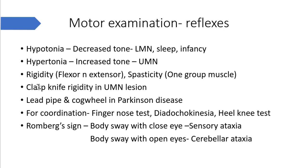In motor examination, you should know the terminology. Hypotonia is decreased tone, caused by lower motor neuron lesion, sleep, and infancy. Hypertonia is increased tone, found in upper motor neuron lesion. Hypertonia is described using the terms rigidity and spasticity. Rigidity is when both flexor and extensor muscles are involved; spasticity is when only one group of muscles is involved.